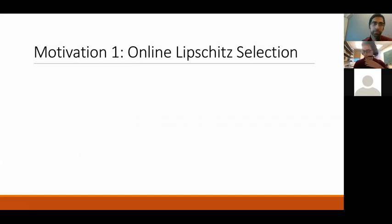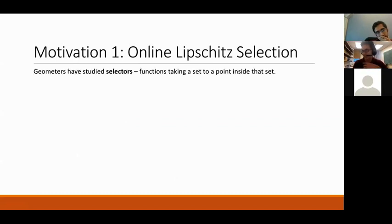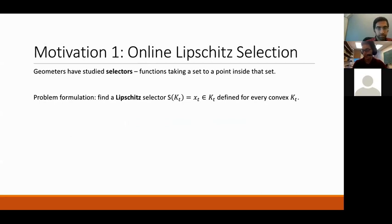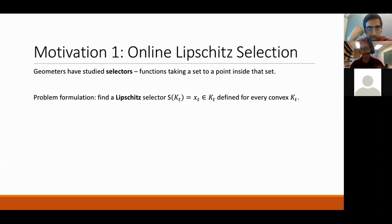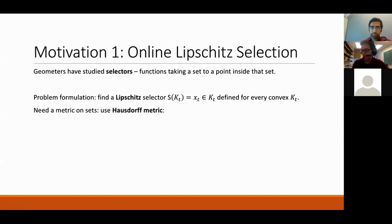The first motivation is online Lipschitz selection. The same problem without the online component has been studied by geometers: define a selector function that takes any convex set and outputs a point in that set, and make it Lipschitz so the output does not change too much when the input convex set changes a little. This has been studied even in infinite dimensions.